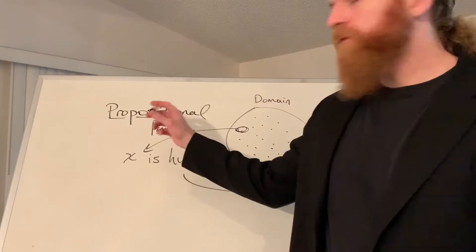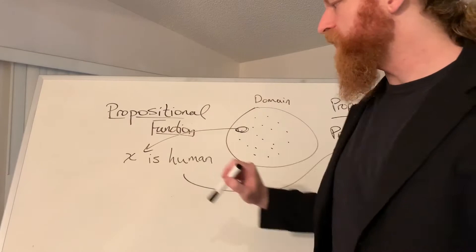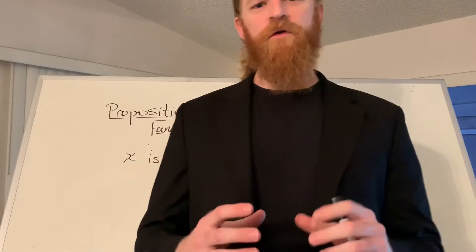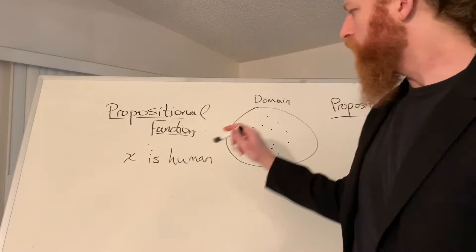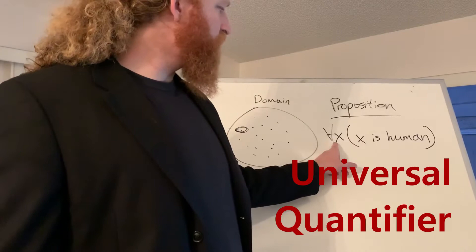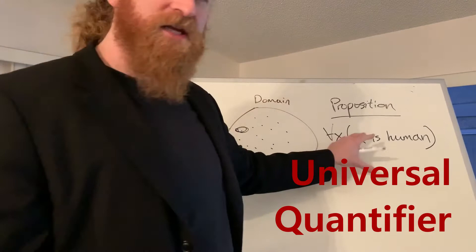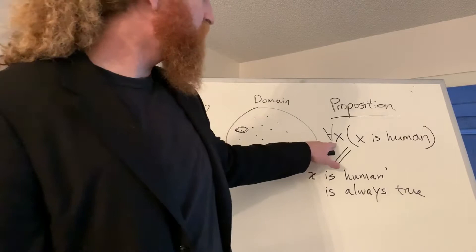One way to go from a propositional function to a proposition is to take one of the particular objects in our domain, plug it in, and out comes a specific proposition referring to a specific object in the domain. But that's not the only way. What if we want to say something about how this propositional function behaves in the case of every object in the domain? Rather than plug each object one by one, we attach what's called a universal quantifier — we say 'for all X, X is human.' This is still at the forefront of the invention of this logical machinery for Russell.